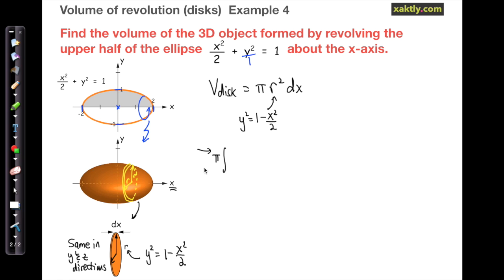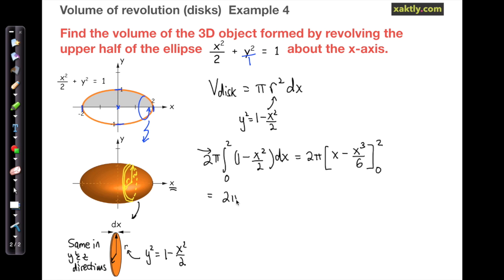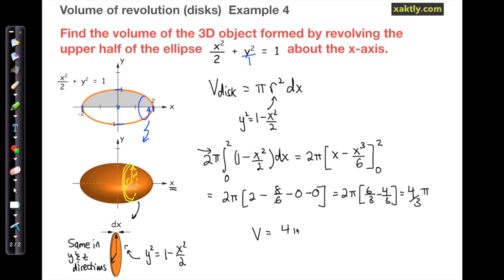We can easily write out our integral now. I'm going to take advantage of symmetry and only integrate between 0 and 2, because the right and left sides of this solid ellipsoid are really the same. This is a pretty straightforward integral to solve. Evaluating the limits is easier after taking advantage of symmetry because one of our limits is 0 — having a 0 limit of integration is always a good thing. We end up with a resulting volume of 4 pi over 3.